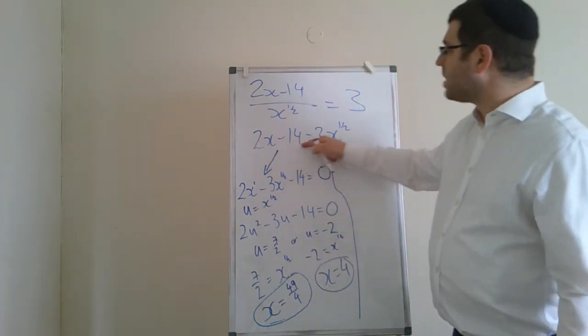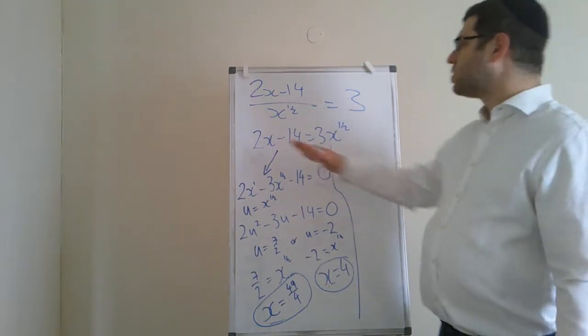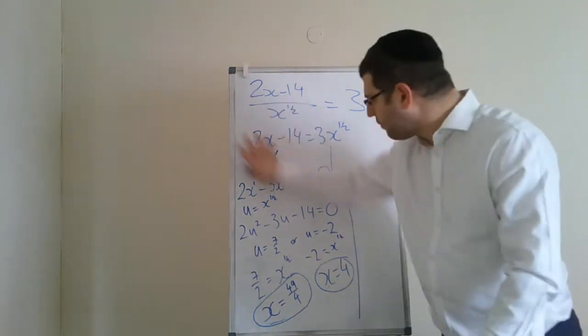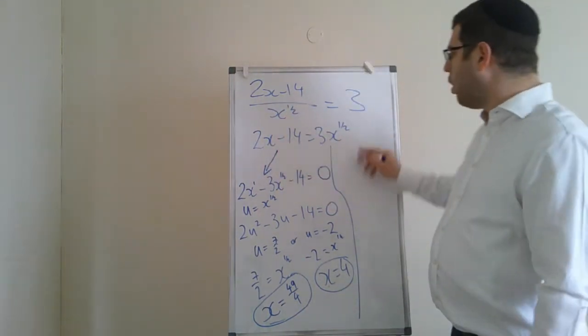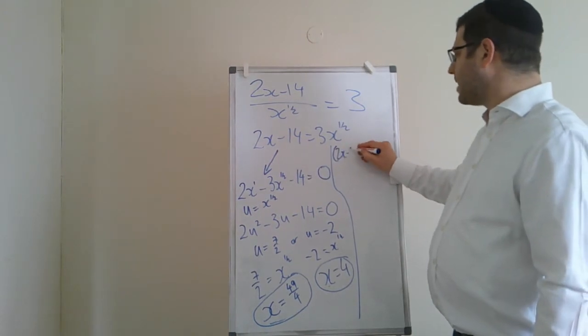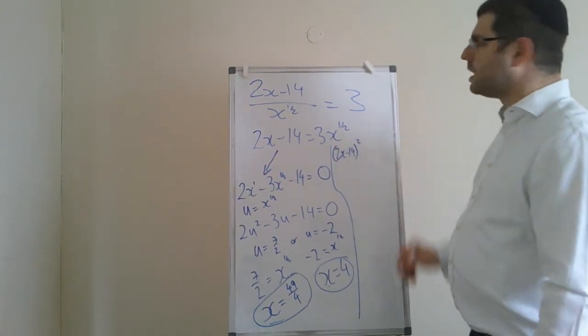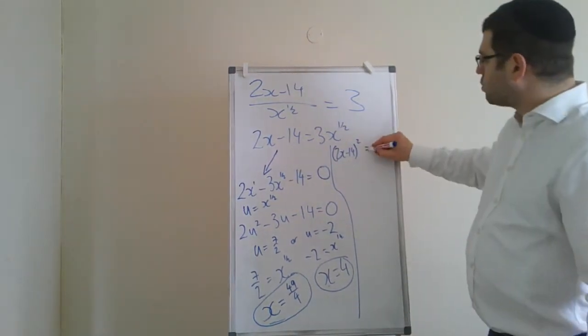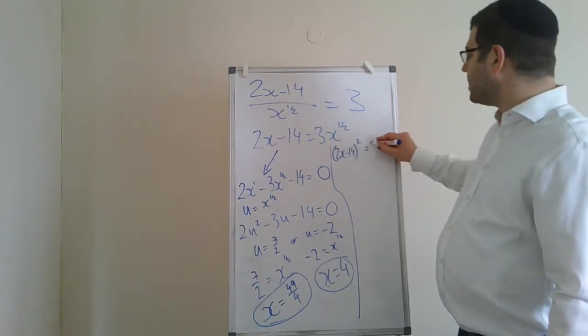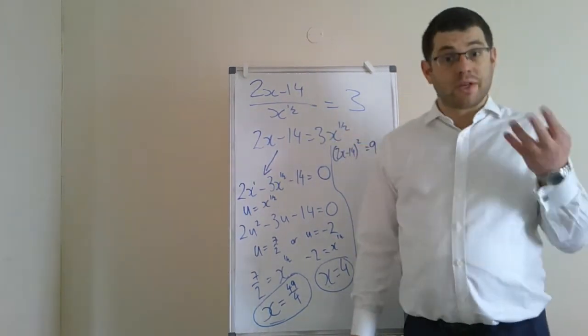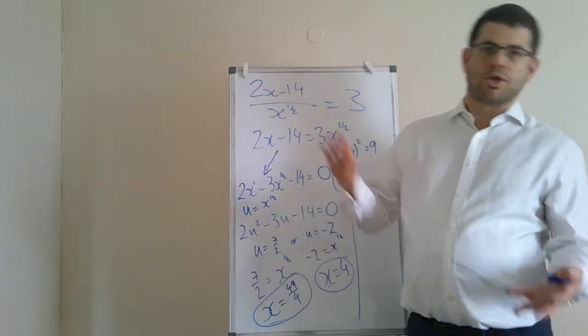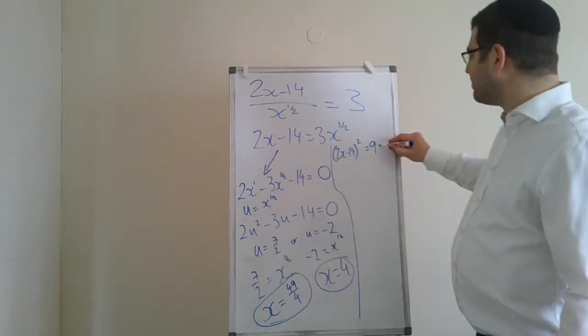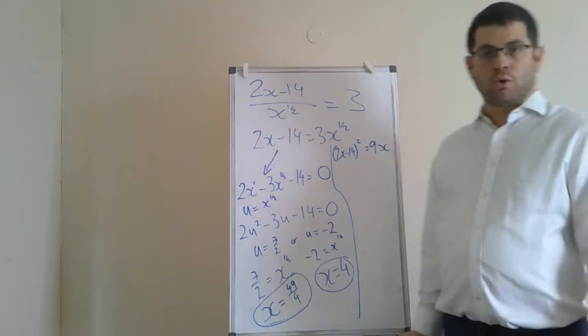So let's see. If I square this side, remember you've got to square the whole thing. You can't square each of them separately. You square the whole thing and square the whole thing. If I square the whole thing, it goes in a bracket: 2x minus 14 all squared. Squaring this side, 3 gets squared easily, it's 9. X to the half is square root x. If you square it, the square root and the square cancel, so that just becomes x. And now we have a regular quadratic.